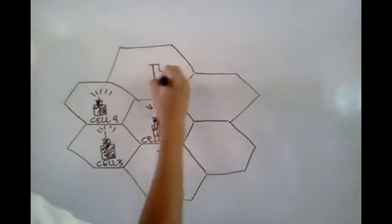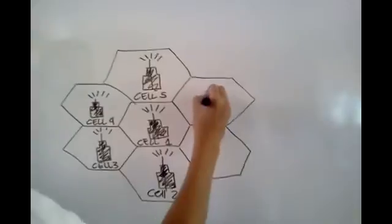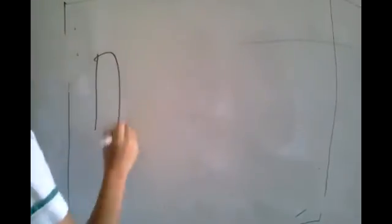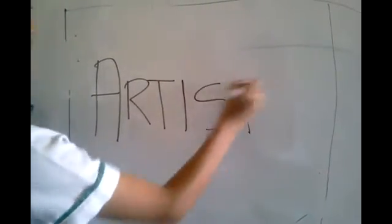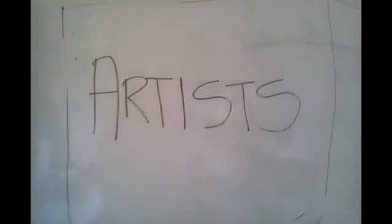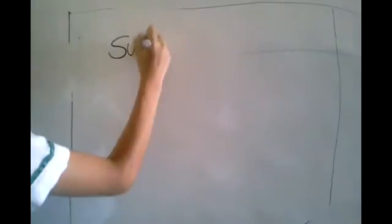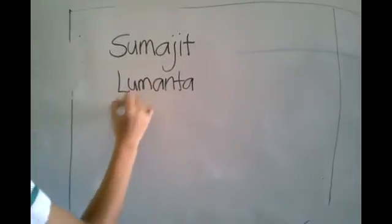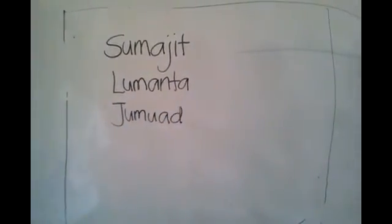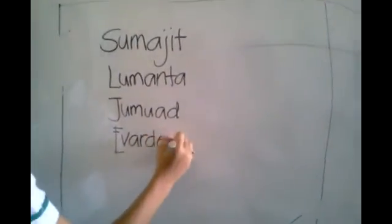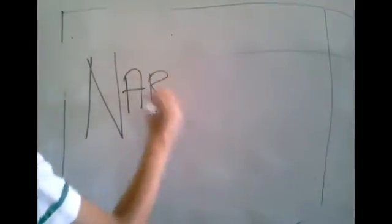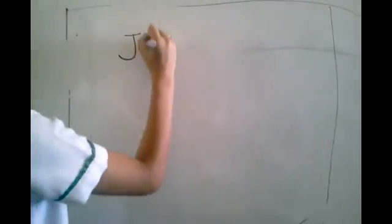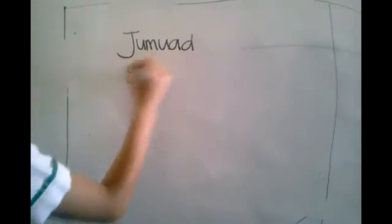Did you know that the term 'cellular' comes from the honeycomb shape of the areas into which a coverage region is divided, represented as hexagons? Engineers discovered that the interference effects were not due to the distance between areas, but to the ratio of the distance between areas to the transmitter power. By reducing the radius of an area by 50%, service providers could increase the number of potential customers in an area fourfold. Systems based on areas with a one-kilometer radius would have 100 times more channels than systems with areas 10 kilometers in radius. Speculation led to the conclusion that by reducing the radius of areas to a few hundred meters, millions of calls could be served.